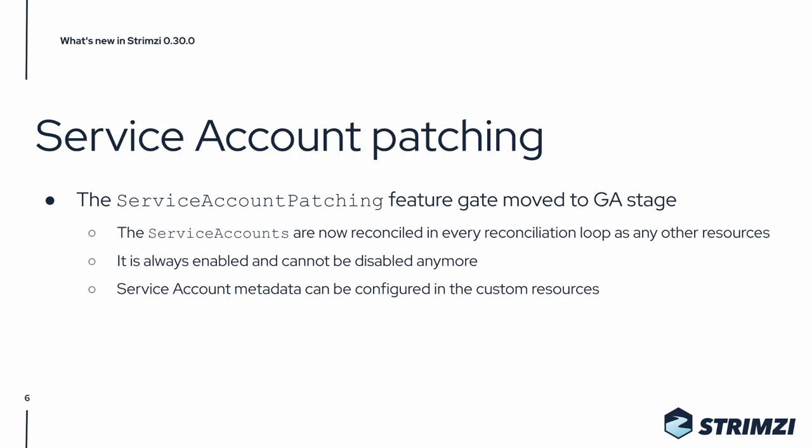Another change is that the service account patching feature gate is moving to the GA stage. That means it is now always enabled and cannot be disabled anymore. The service accounts are now reconciled in every reconciliation loop as any other resource managed by StreamC, meaning that the service account metadata can now be configured through the custom resources.